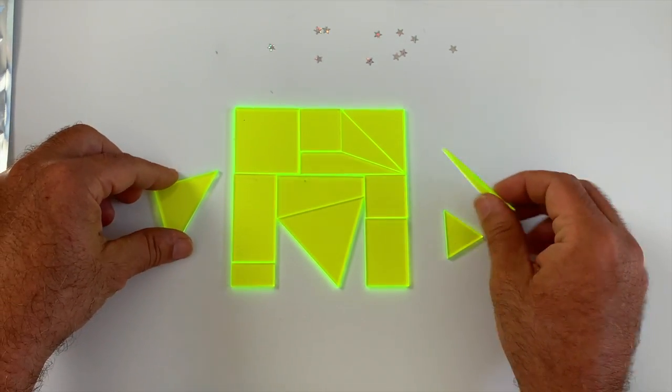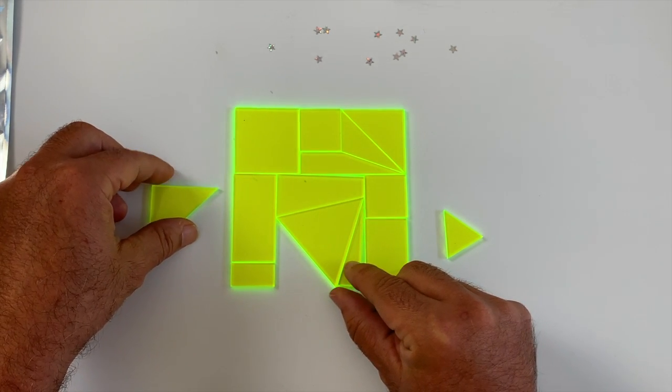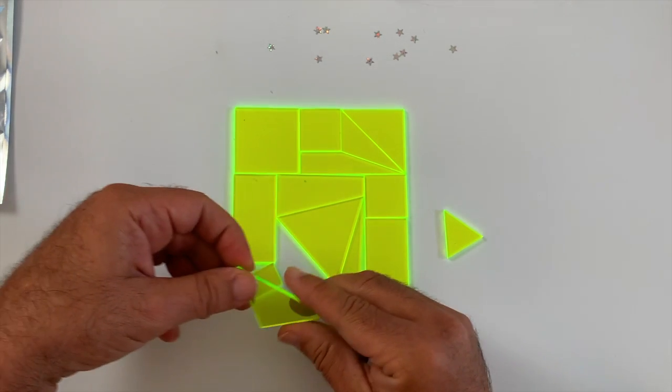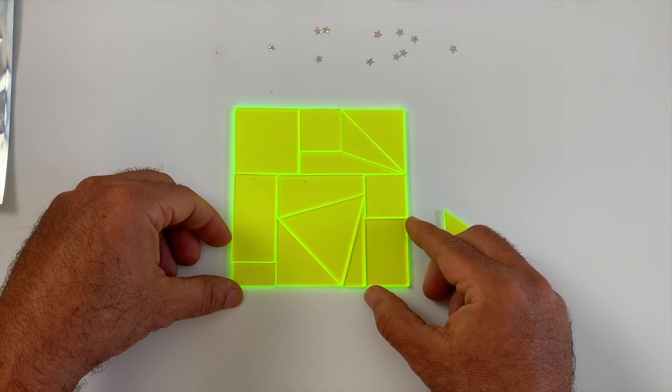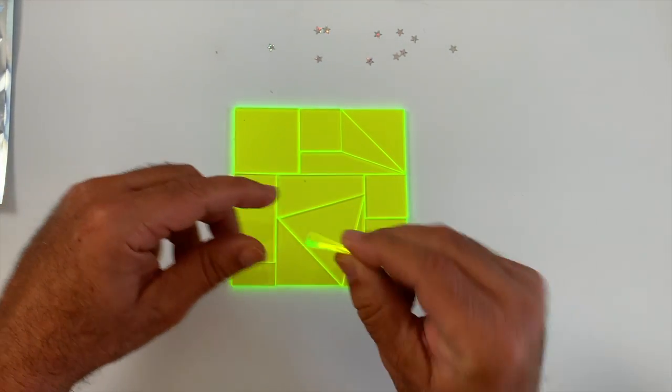Now you know what's happening. This goes in here. This other triangle goes here. And there you have it: perfect square, gorgeous puzzle. And the piece that's left out is this little triangle.